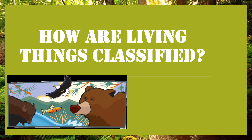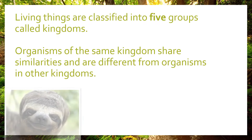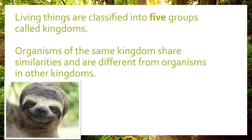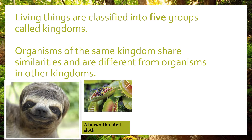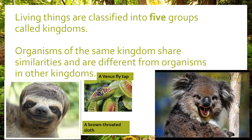How are living things classified? Living things are classified into five groups called kingdoms. Organisms of the same kingdom share similarities and are different from organisms in other kingdoms. Here are some pictures of animals in the animal kingdom: a brown-throated sloth, a koala bear, and a Venus flytrap from the plant kingdom.